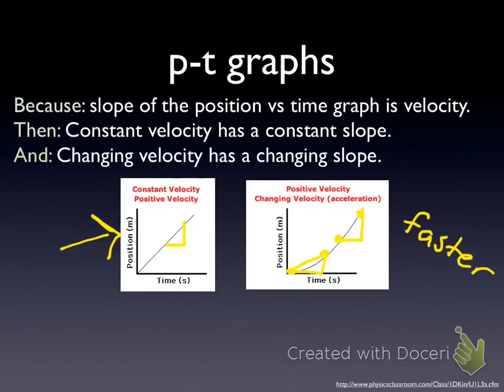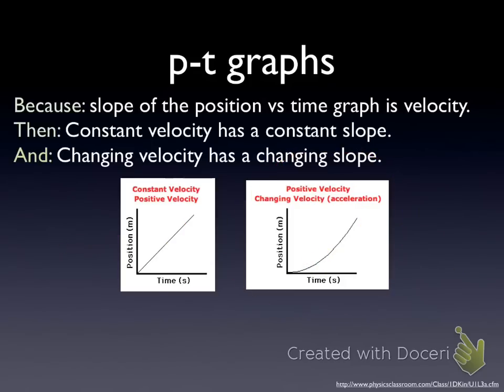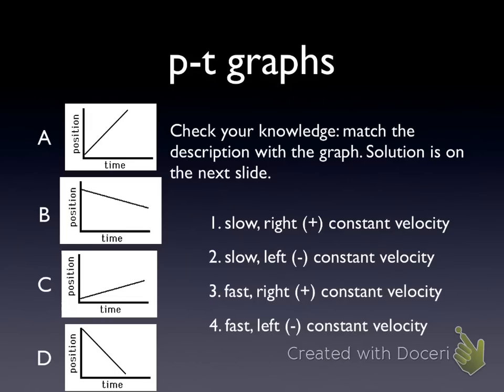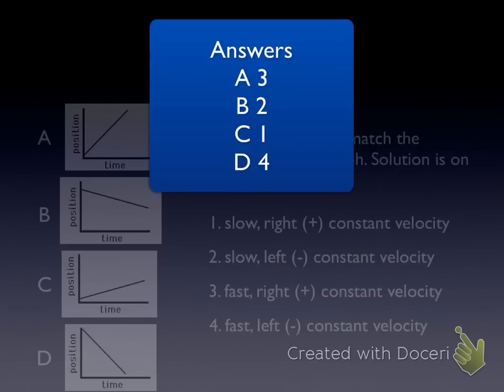This shows an object that's getting faster. We're going to look at objects right now that are doing this — that are getting faster. Let's see what you remember about position-time graphs. Match each graph on the left with a situation on the right. Pause the video now and restart once you've answered the question. Okay, let's check your answers. If you got any wrong or don't understand, please check with me by email or in class.